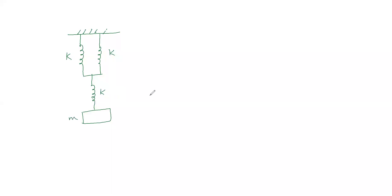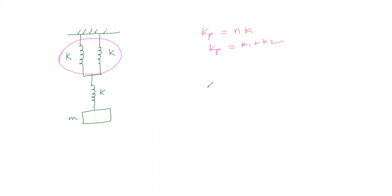To find the effective force constant, let us assume these two springs are in parallel. For parallel combination, effective force constant equals nk if all springs are identical; otherwise kp = k1 + k2 + k3. For series combination with two springs, the formula is ks = (k1 × k2) / (k1 + k2).